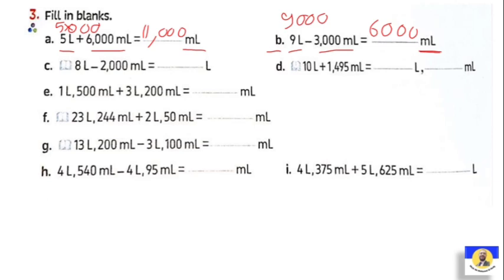Letter c: 8 liters minus 2000 mL. Answer needed in liters, so convert mL to liters: 2000 ÷ 1000 = 2 liters. Then 8 liters minus 2 liters equals 6 liters.